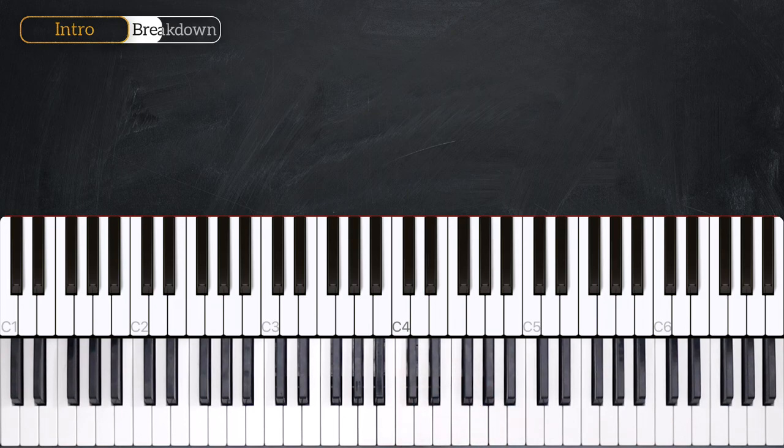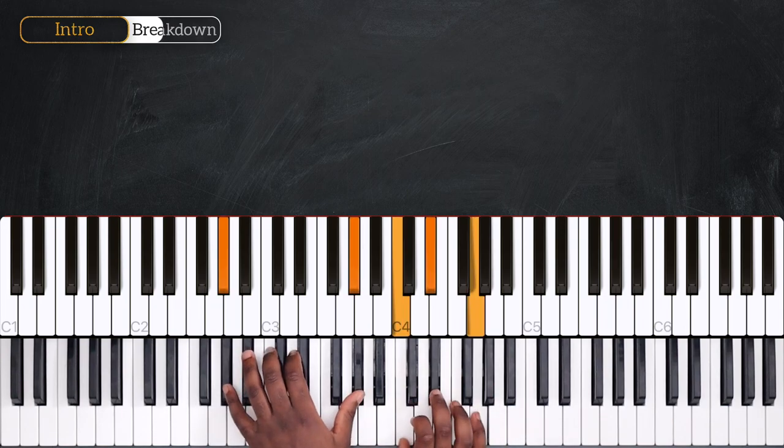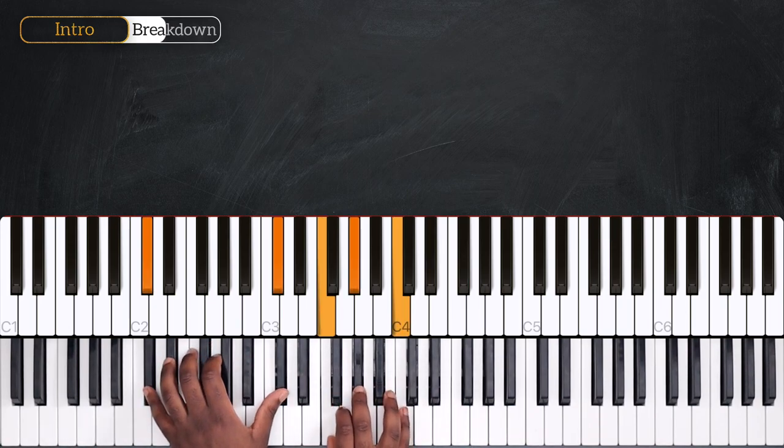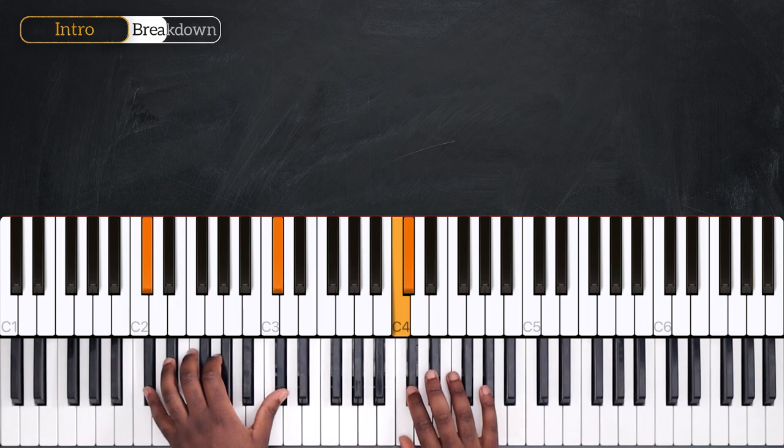And then we're going to play Ab major 7 for one measure. 1, 2, 3, 4. And then Db for one measure. 2, 3, 4.